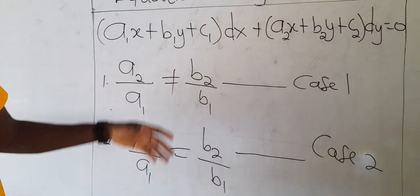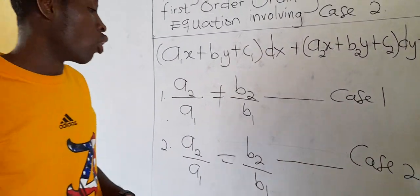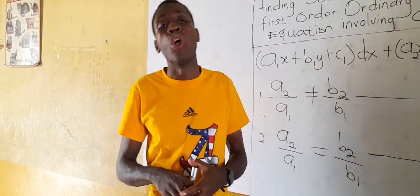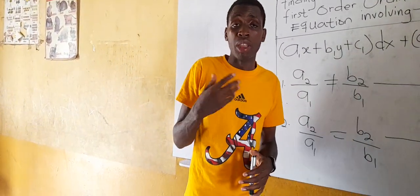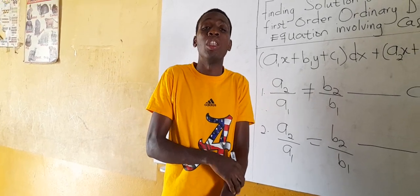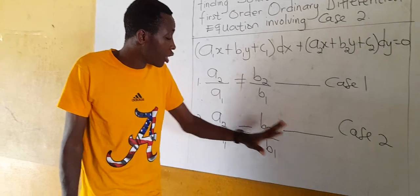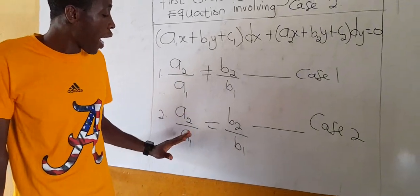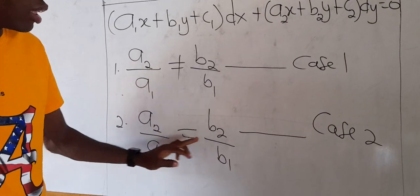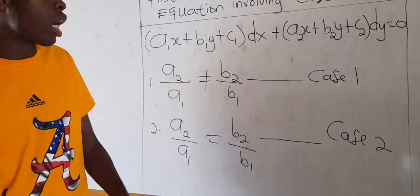We already solved problems covering case 1, and I know you are comfortable with it if you have really watched the video. If you didn't, please go to YouTube and search for it and watch the video covering that one. Today we are going for the situation where a2 over a1 is equal to b2 over b1.